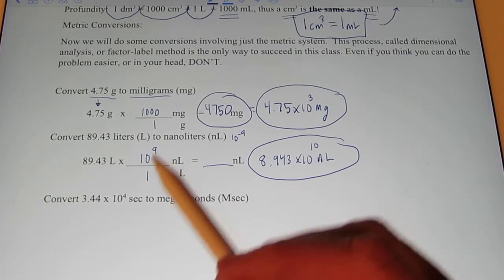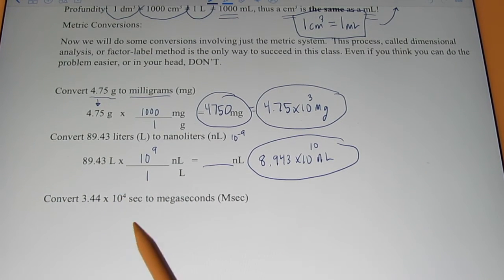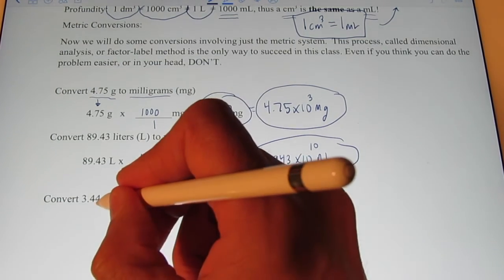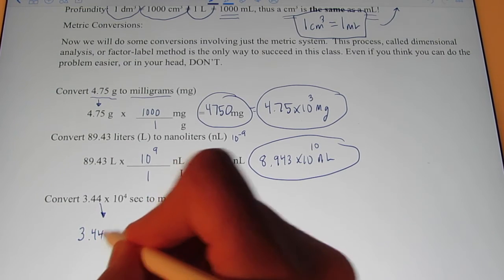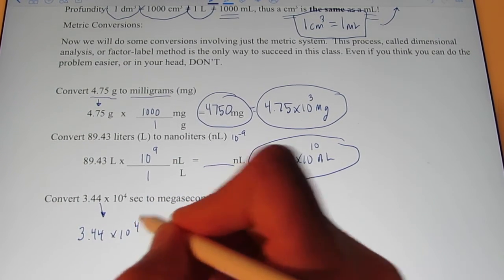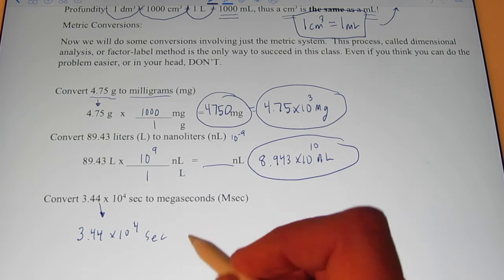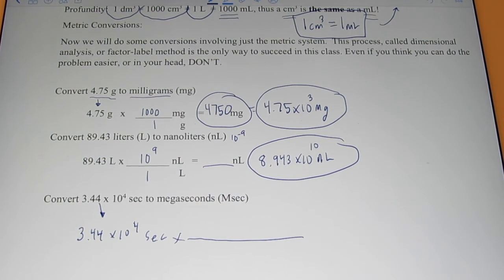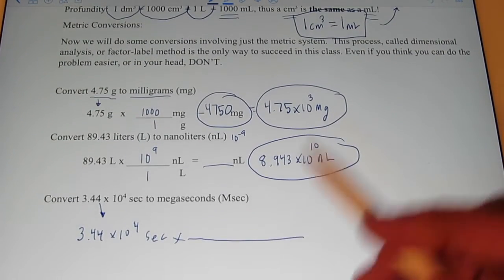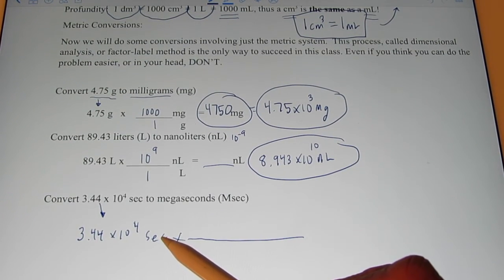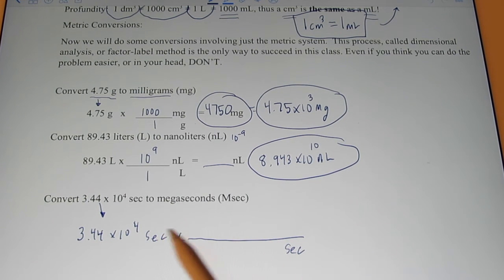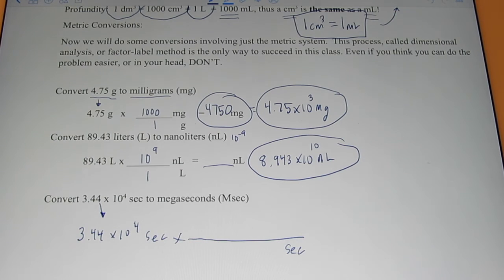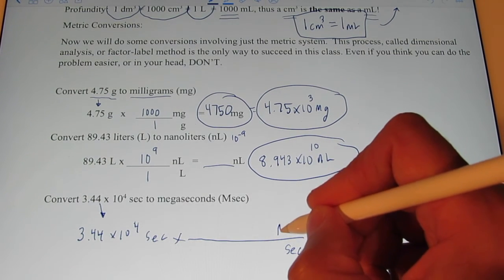Let's do another one here. Let's convert 3.44 times ten to the fourth seconds into megaseconds. So, we begin by writing down what we know: 3.44 times ten to the fourth seconds, and multiply by a conversion factor. Now, the unit you want to get out of is always opposite of where it starts. So, if it starts on top, I want to put it on the bottom. That way, that unit will divide out.